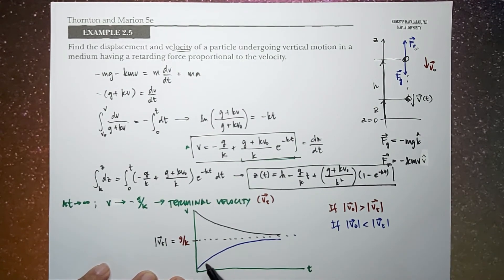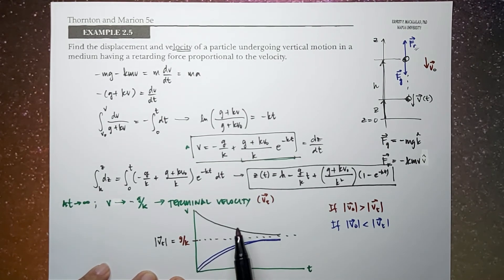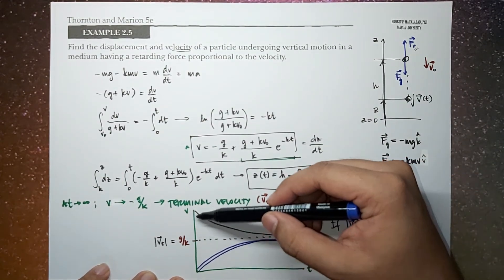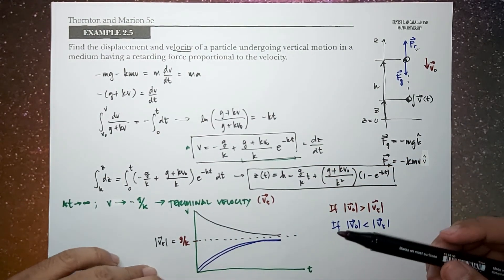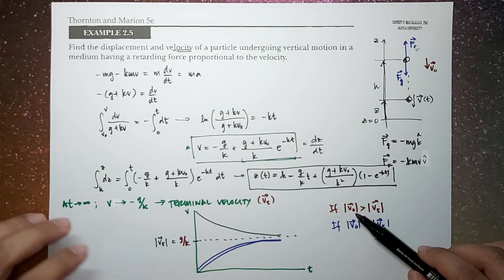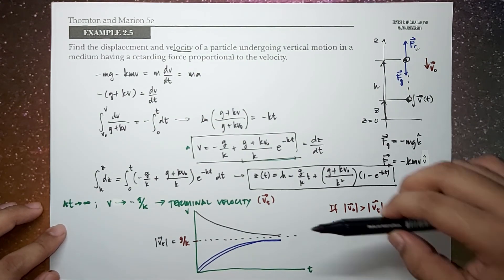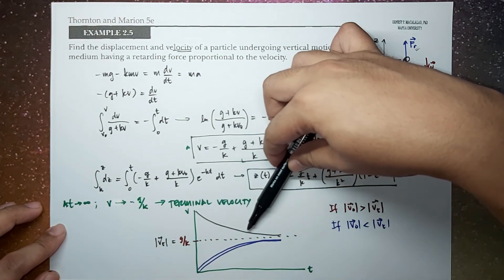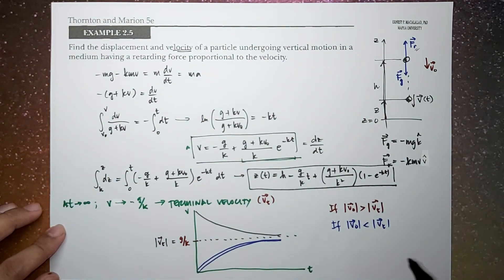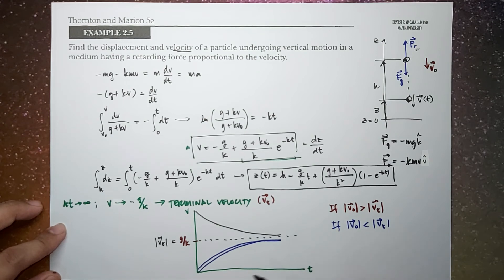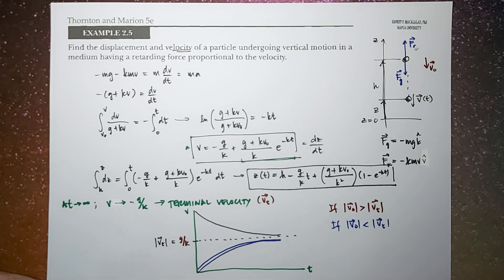If the object starts from rest, it will look similar — increasing up to terminal velocity. So to summarize: if the initial velocity is greater than terminal velocity, the velocity will slow down exponentially. If the initial velocity is less than terminal velocity, it will speed up. But in both cases, it will reach the limiting value called the terminal velocity.